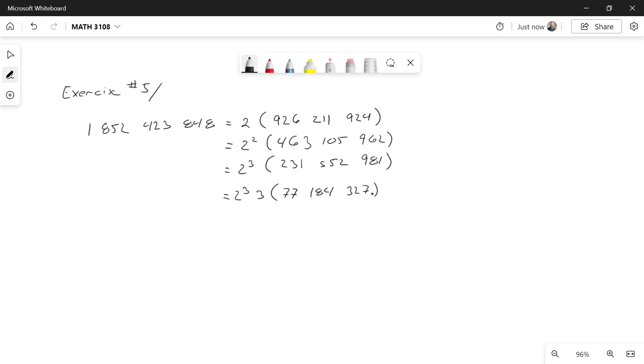Well, the number is getting smaller. Not quite small enough yet. And again, it's not even. So I could try dividing out another 3, and it will work. So this is 2 to the 3, 3 squared. And what I'm left with now is 25,728,109.